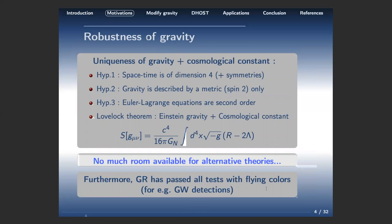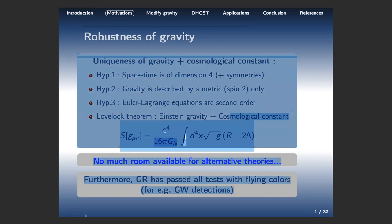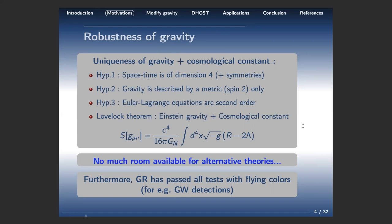What makes general relativity beautiful is certainly its uniqueness, illustrated very well by the Lovelock theorem. If we assume spacetime is four-dimensional with diffeomorphism symmetry, that gravity is described by a metric only — a spin-2 tensor — and that the Euler-Lagrange equations are second order, then we cannot escape the Lovelock theorem: the only possibility is Einstein gravity plus a cosmological constant. It seems that from this theorem there is not much room for alternative theories.